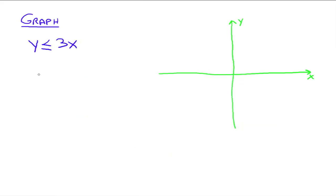Let's do one more. Think of it as Y equals 3X — it's already in slope-intercept form. The slope is 3 and the Y-intercept is 0, so we start at the origin. The slope is 3 over 1, so up 3 and over 1. Since it's less than or equal to, the line is solid.